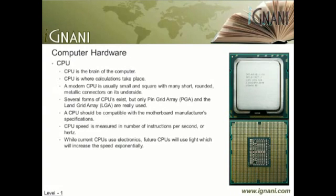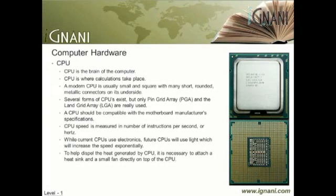While current CPUs use electronics, future CPUs will use light, which will increase speed exponentially. After running even a short while, modern CPUs can get very hot because of the number of calculations that go on inside, due to the complexity of modern day software. To help dispel this heat, it is necessary to attach a heat sink and a small fan directly on top of the CPU. Typically, the heat sink and fan come bundled with a CPU purchase. For a detailed coverage on CPU, please check out our tutorial on the same.